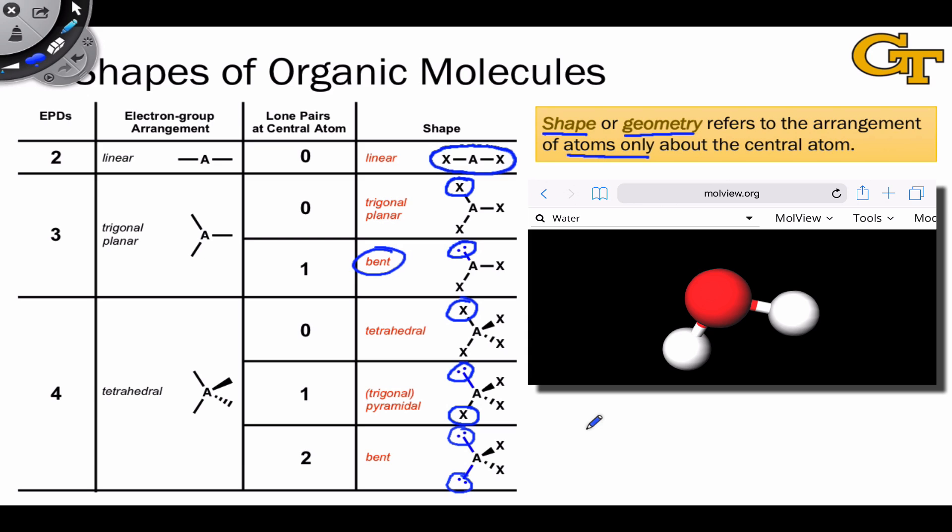Hopefully this discussion has helped you see why we distinguish between the electron group arrangement, which takes into account or factors in the locations of the lone pairs, versus the shape, where we look only at the positions in the atoms.